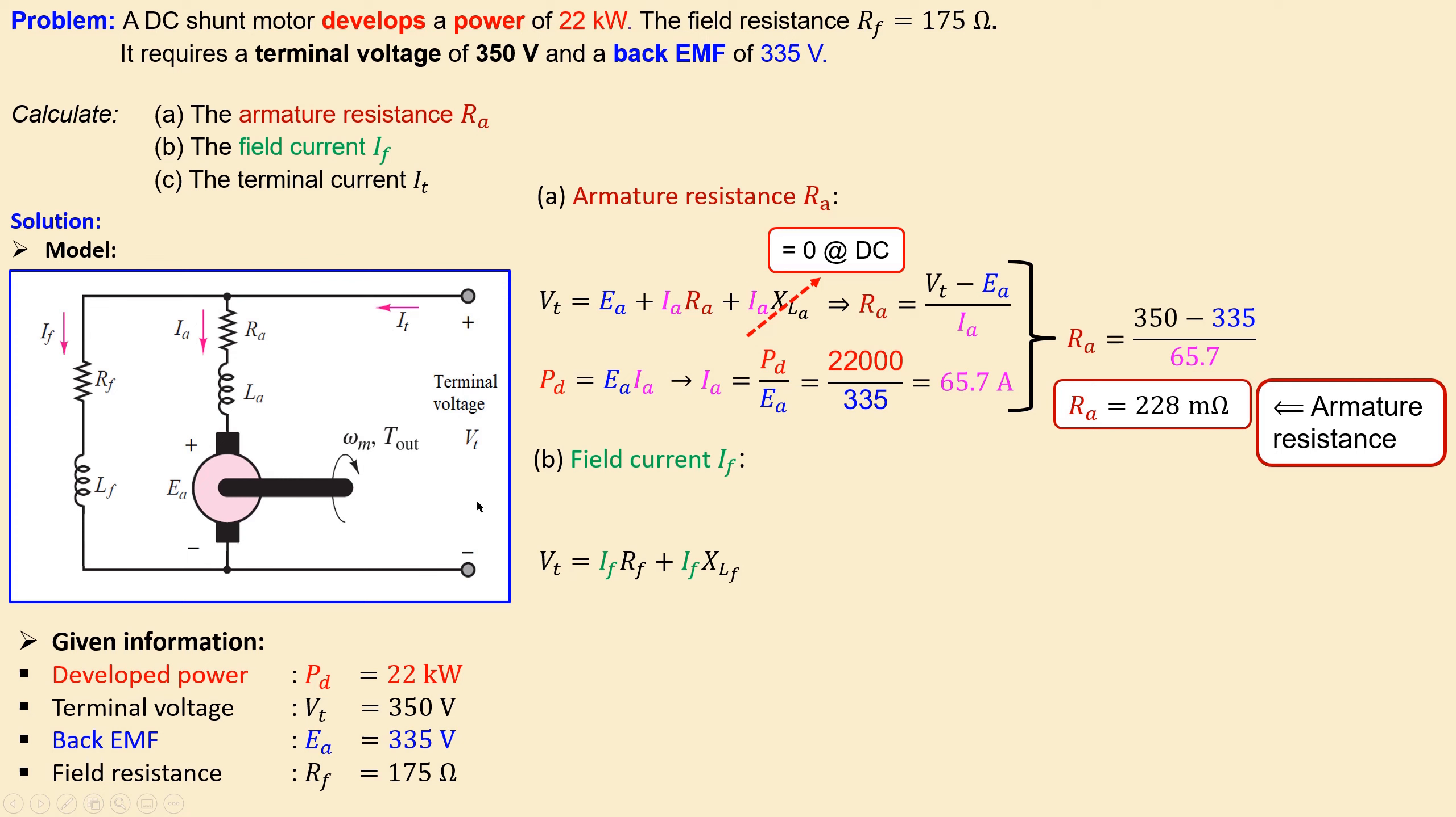The field current is the current flowing in this branch and again we can set up a voltage loop here. The terminal voltage will be the voltage across this R_f plus the voltage across this inductor. But again the reactance of this inductor will be zero since this is a DC current. So the equation for the field current is very simple: terminal voltage over R_f which is already given. Substituting the given values, we get two amperes.